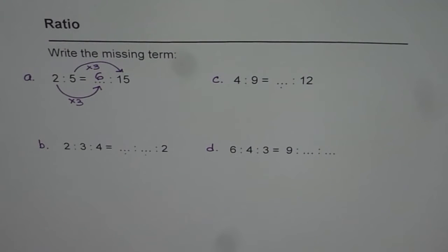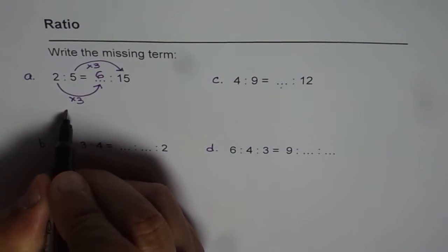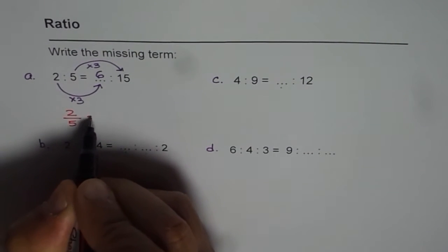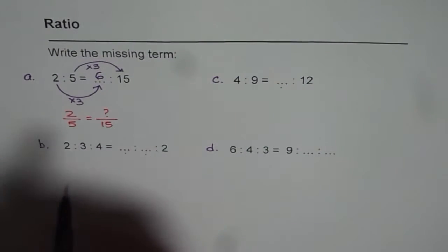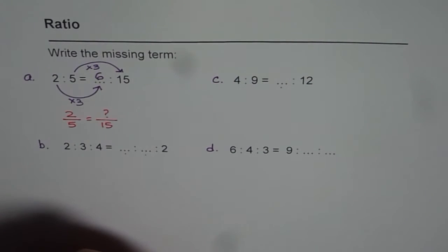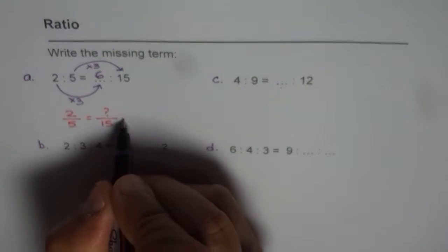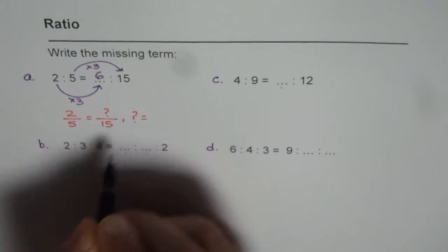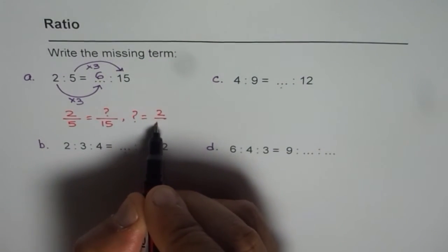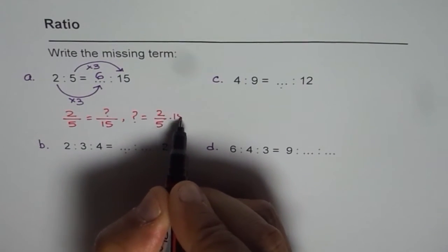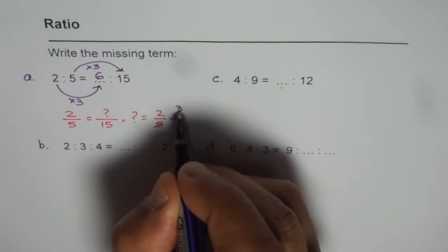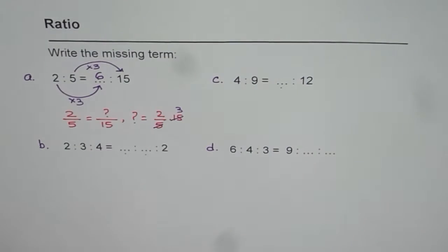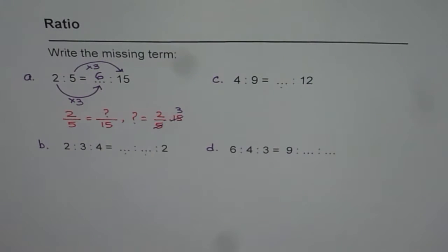The other way is we could write it as fractions. That is 2 over 5 is to what we don't know is to 15. Now what we don't know we can find by cross multiplying. So the missing number is 2 over 5 times 15. Now we can always simplify it. So 5 goes 3 times, so 2 times 3 is 6. So that is another way of doing it. This is how we should be solving ratio problems.